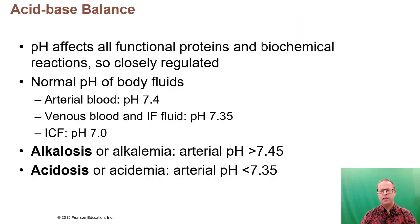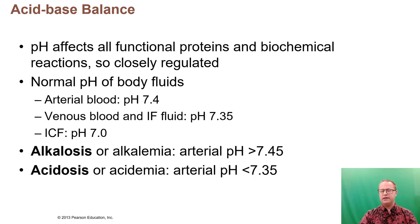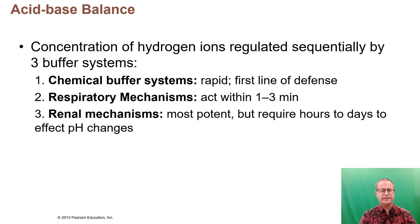Now we'll talk about acid-base balance. Some electrolytes are acids or bases that affect body pH. The normal pH of blood is between 7.35 and 7.45. Below 7.35 is acidosis; above 7.45 is alkalosis. A lot of acid is produced by metabolism — as we break down carbohydrates, proteins, and fatty acids, we liberate hydrogen ions into the bloodstream. Fortunately, we have three buffer systems: a chemical buffer system, a respiratory mechanism, and a renal mechanism for regulating pH.